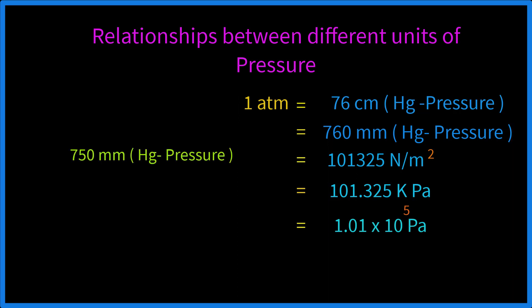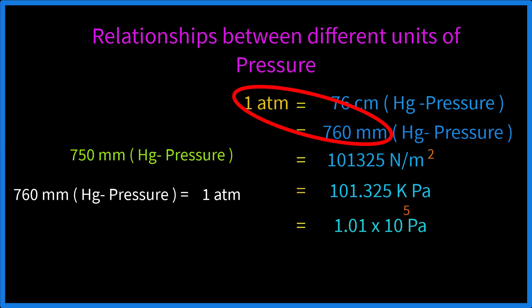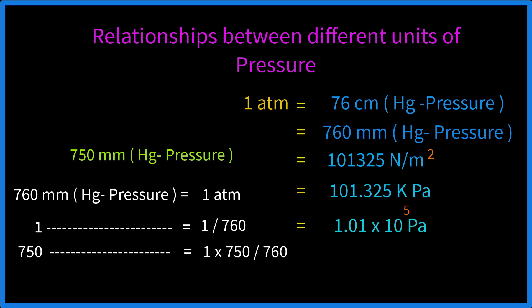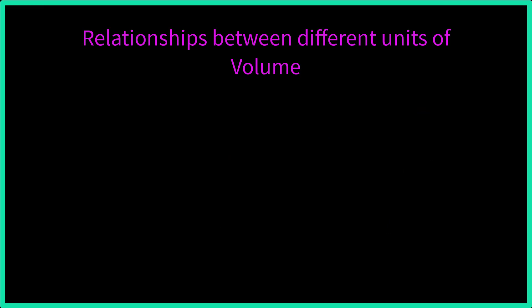Suppose we have 750 mmHg given in a stimulus. This unit is not ATM, so we need to convert it. From the chart, 760 mm mercury equals 1 ATM, so 1 mm mercury equals 1/760 ATM. Therefore, 750 mm mercury equals 750/760 ATM, which is 0.986 ATM.